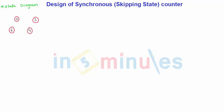Welcome to 'In 5 Minutes.' In this presentation we are going to see the design of a synchronous counter, particularly a skipping state counter. For skipping states, let us consider an example where the state diagram shows 0→2→4→6. So after state 0, state 1 is skipped; after 2, state 3 is skipped; after 4, state 5 is skipped; after 6, state 7 is skipped, and the counter returns to 0 in a closed path.